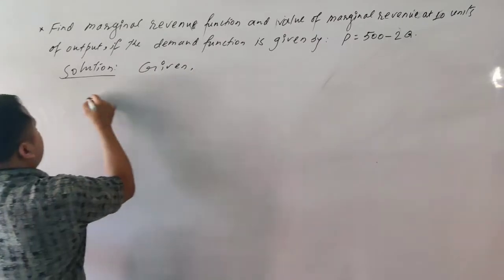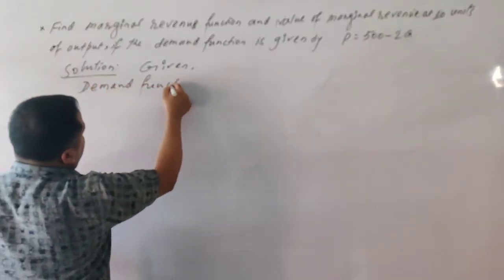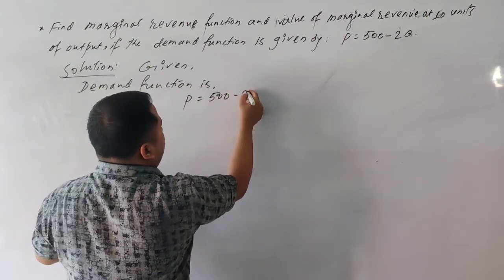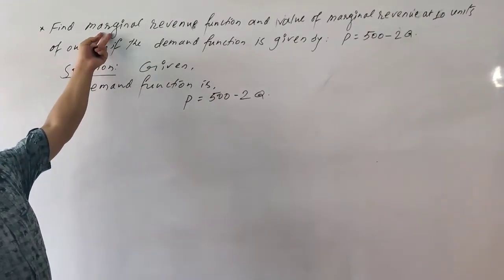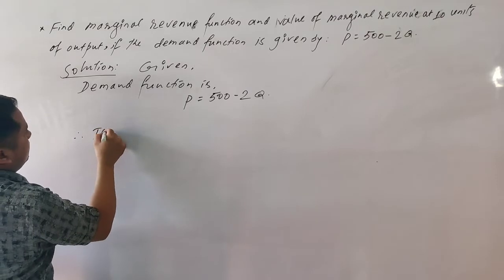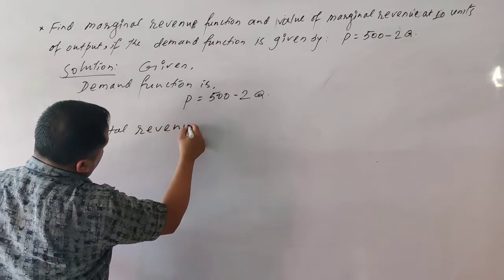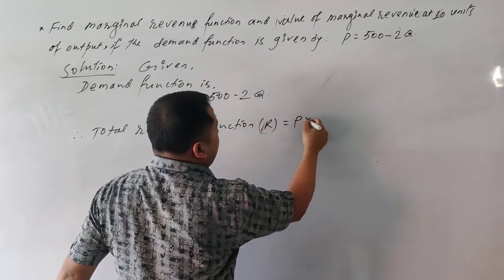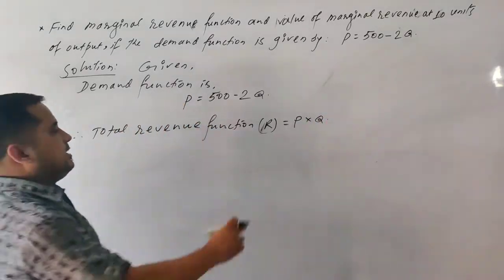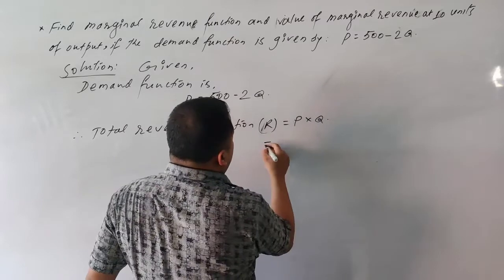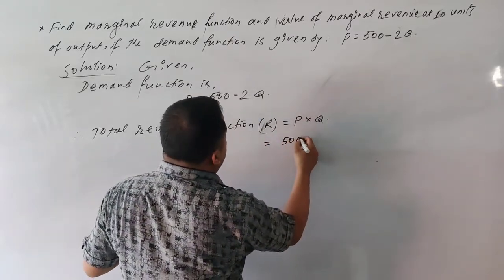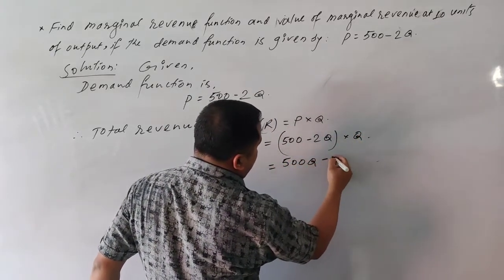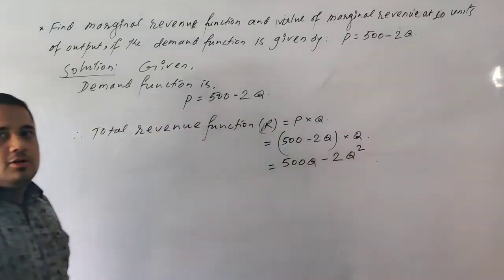The demand function is P equals 500 minus 2Q. The total revenue function TR equals price multiplied by quantity, so TR equals 500 minus 2Q multiplied by Q, which gives TR equals 500Q minus 2Q squared.